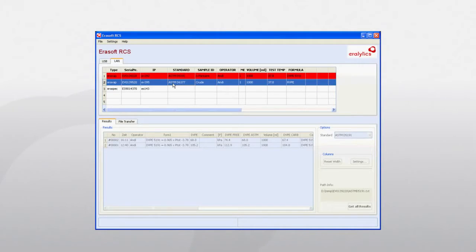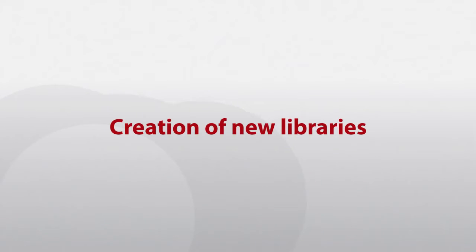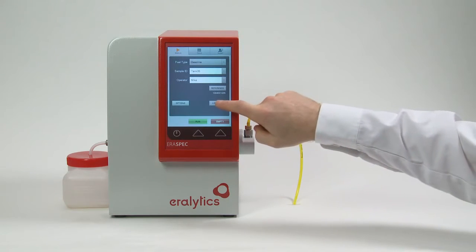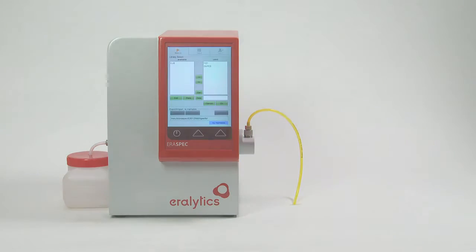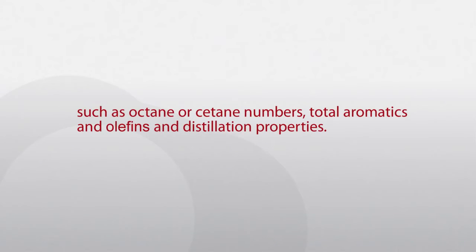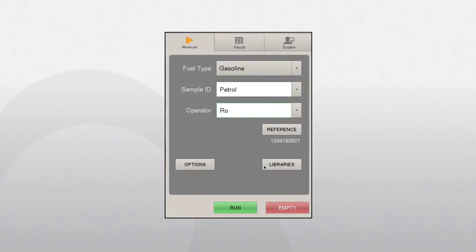Creation of new libraries: To create new libraries, go to the Select Libraries option in the measure menu. Aerospec uses a library or database to calculate results for complex parameters such as octane or cetane numbers, total aromatics and olefins, and distillation properties. The libraries store the spectra of typical samples together with the known values of these parameters as determined by the respective reference methods.